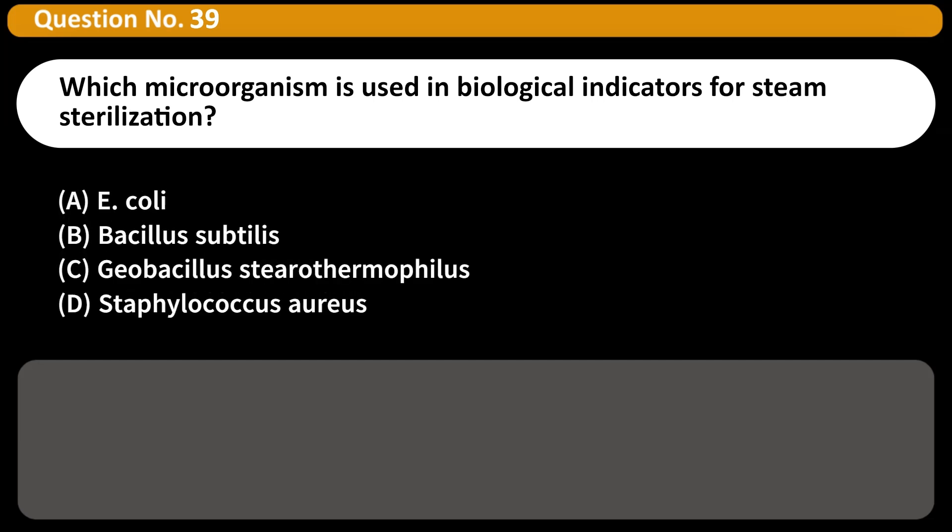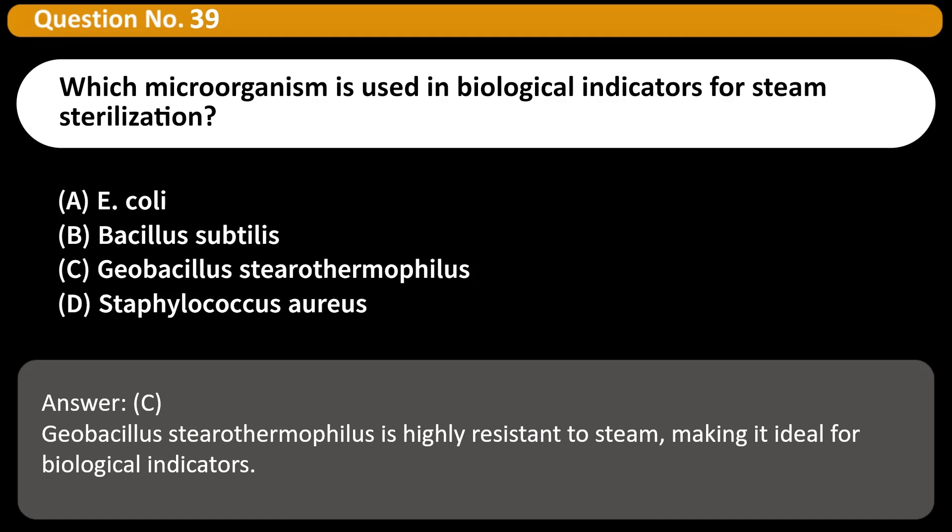Which microorganism is used in biological indicators for steam sterilization? A. E. coli, B. Bacillus subtilis, C. Geobacillus stearothermophilus, D. Staphylococcus aureus. Answer C. Geobacillus stearothermophilus is highly resistant to steam, making it ideal for biological indicators.